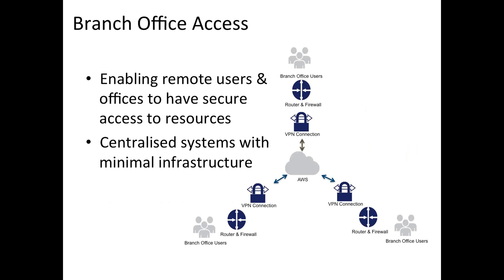Then there's branch office access. In this case, you can set up AWS with multiple VPN connections, have virtual routers on each of these connections, and allow access from those virtual routers to the branch offices. Because of the routing tables, you can get very specific on how you want routes to go out and what people have access to. You can centralize all your administration. It's very minimal infrastructure — AWS is using the backbone in this case.